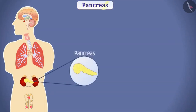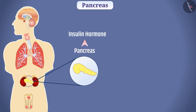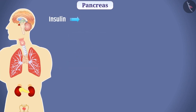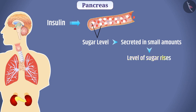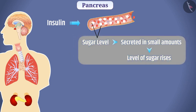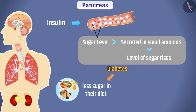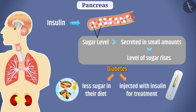The pancreas, present behind the stomach, secretes insulin hormone. Insulin helps control sugar levels in the blood. If insulin is secreted in small amounts, blood sugar rises, causing a disease called diabetes. Diabetic patients take less sugar in their diet and are injected with insulin for treatment.